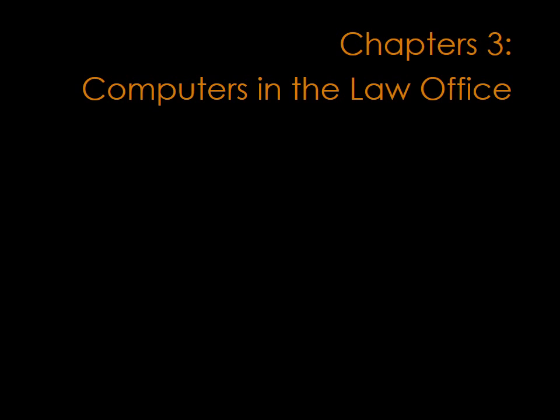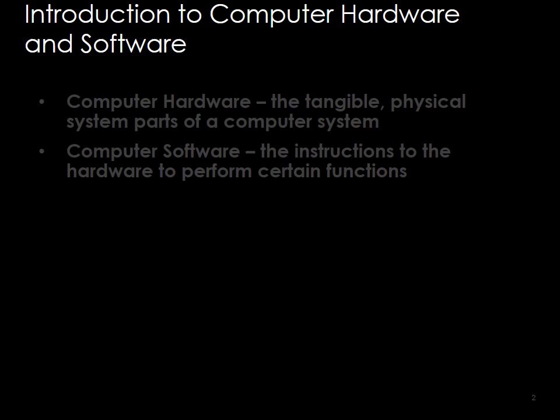Chapter 3 deals with computers in the law office and it is basically an introduction to computer hardware and software. The basic distinction made in the book is that computer hardware refers to the tangible, touchable, physical system parts of a computer system. So a mouse, the box in which the central processing unit and motherboard reside, the internal hard drive, the monitor or flat panel display — those are aspects of computer hardware.